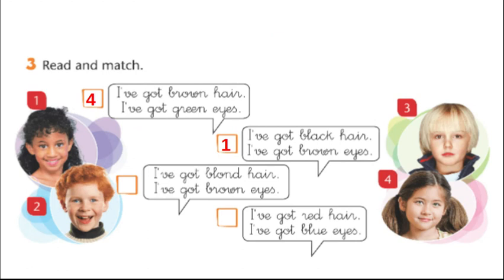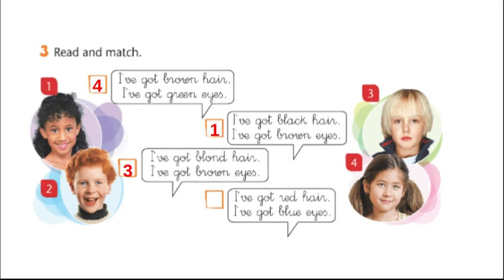Let's go to the next one. It says: I've got blonde hair. We know number one can't be the answer because she has black hair. Number two — does he have blonde hair? No, he doesn't. Let's try number three. Does he have blonde hair? Yes, he does. Does he have brown eyes? Yes, he does. So number three is a match. I'm going to write number three in the box next to: I've got blonde hair. I've got brown eyes.